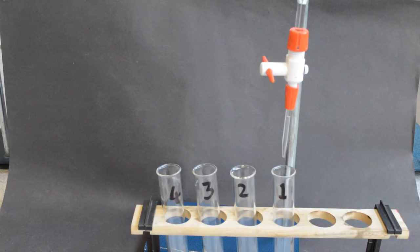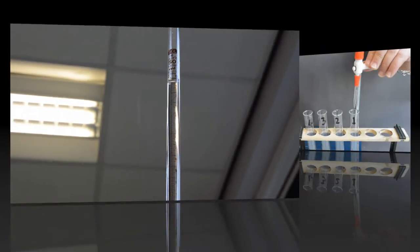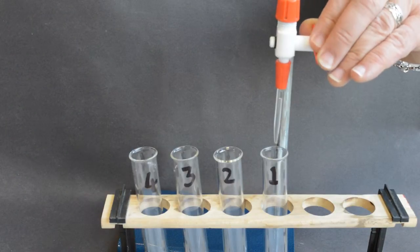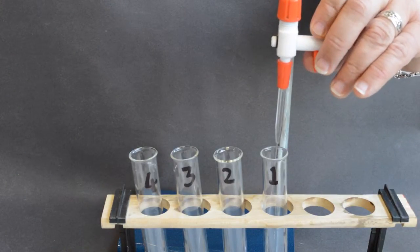Please ensure that the burette has already been conditioned with distilled water, then add the distilled water to perform your colorimetry. Note the initial volume of distilled water in the burette. Into the test tube labeled one, add nine milliliters of distilled water.